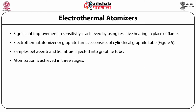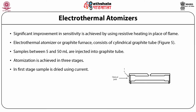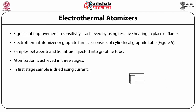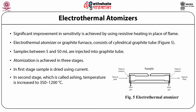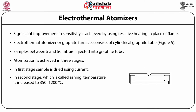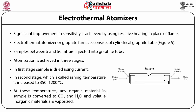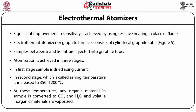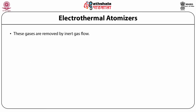Atomization is achieved in three stages. In the first stage, the sample is dried using a current that raises the temperature of the graphite tube to about 110°C; dissolvation leaves the sample as a solid residue. In the second stage, called ashing, the temperature is increased to 350 to 1200°C. At these temperatures, any organic material is converted to CO₂ and H₂O, and volatile inorganic materials are vaporized. These gases are removed by the inert gas flow.